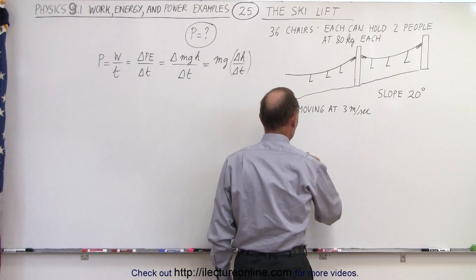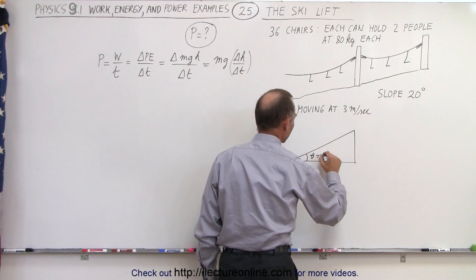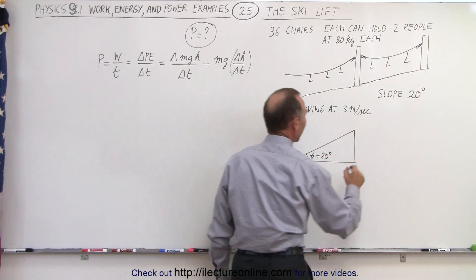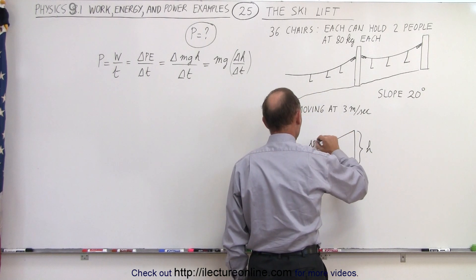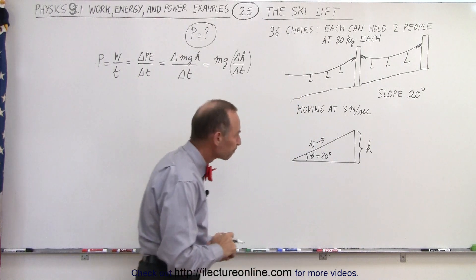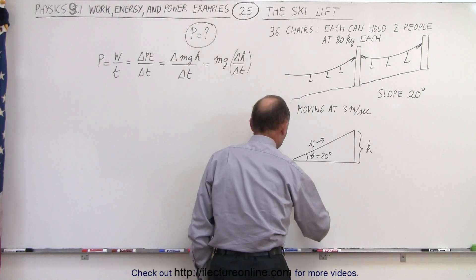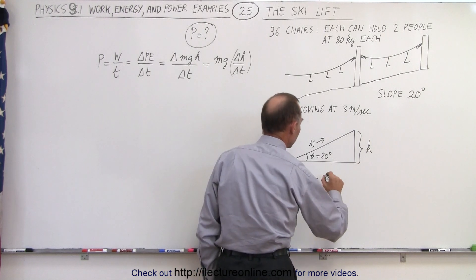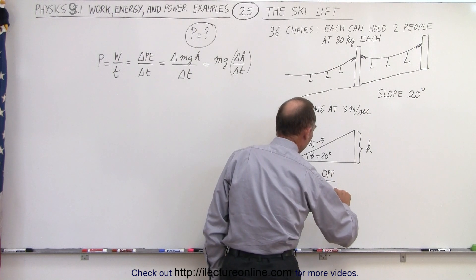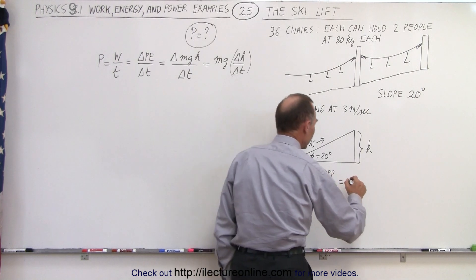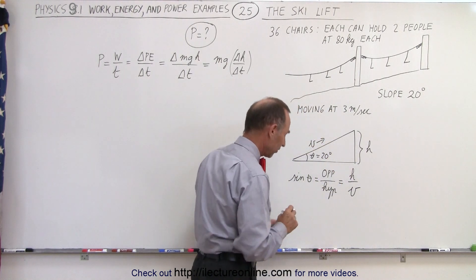So what we can then do is draw a triangle. In our triangle we have an angle theta equal to 20 degrees, and here this would be the height gained, and here along the hypotenuse would be the velocity of the skiers going up the hill. And then there's a relationship between that. We can say that the sine of theta by definition is equal to the ratio of the opposite side over the hypotenuse, and so in this case that is equal to the height divided by the velocity, but actually not the velocity.